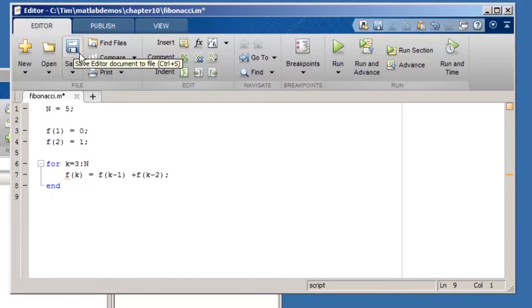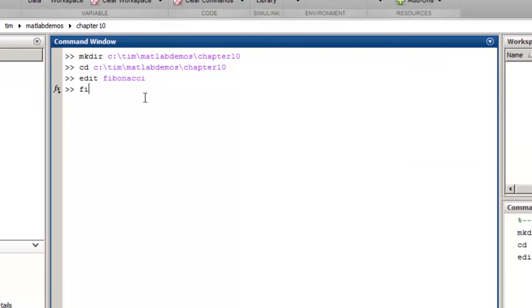I'll save the code and then run it by typing the file name at MATLAB's command prompt. To see the values of my series, I type f. Looks like the first five elements are correct, so my code seems to be running properly.